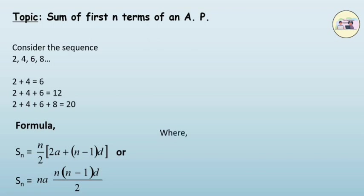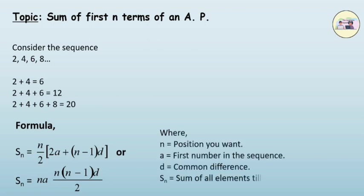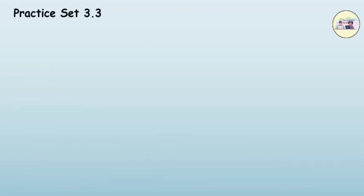We have seen what all the other terms mean. S(n) is the sum of all elements till the nth position. Now let's see Practice Set 3.3, Question 6. The sum of the first 55 terms in an AP is 3300. Find its 28th term.